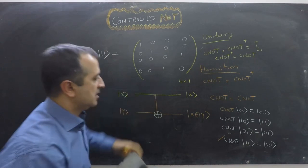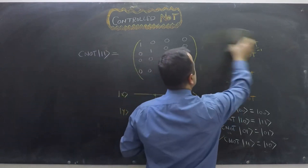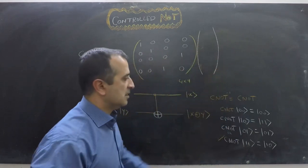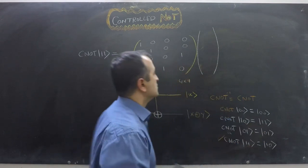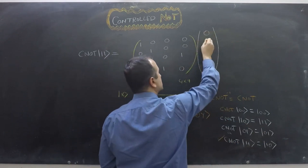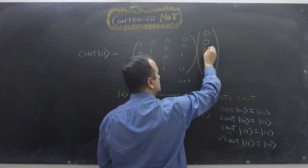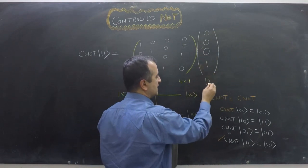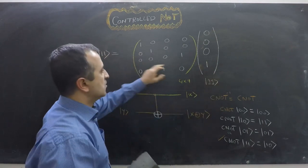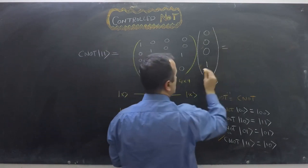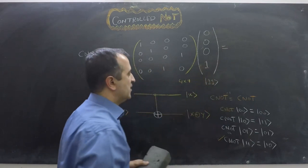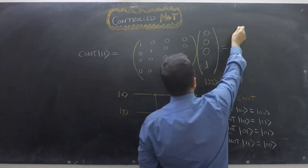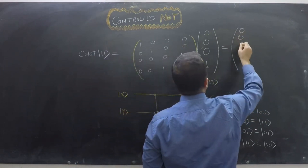The CNOT matrix is applied to |11⟩, which is represented as a vector with a 1 in the third position (0-indexed). Positions 0, 1, 2, and 3 correspond to |00⟩, |01⟩, |10⟩, and |11⟩ respectively. Because position 3 has a 1, the result is the third column of the CNOT matrix: [0, 0, 0, 1].